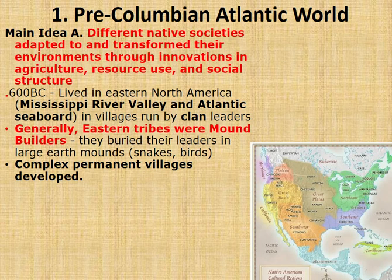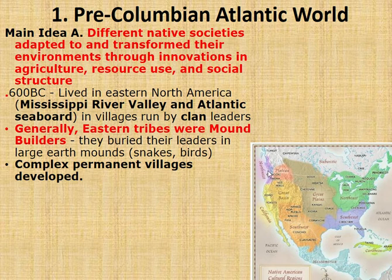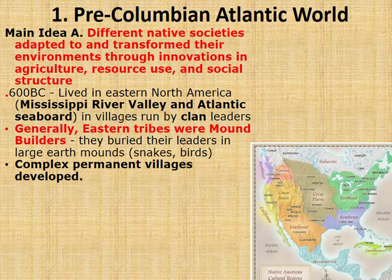We're going to start with the pre-Columbian societies of the New World, of the Americas. The defining characteristic of the Southeast, Northeast, Great Plains, Great Basin, Southwest, and Plateau regions of North America is that these very diverse indigenous native societies adapted to and transformed their environments through innovation in agriculture, resource, and social structure.